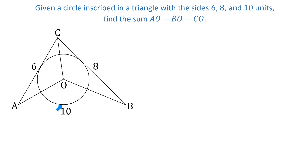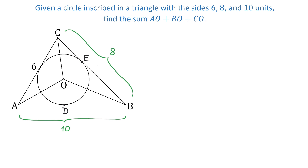Side AB intersects the circle at a point — let's call it point D. Side BC intersects the circle at a point — let's call it point E. Then side AC intersects the circle at a point, and we will call it point F. Now let's connect the center of the circle with each of these points.